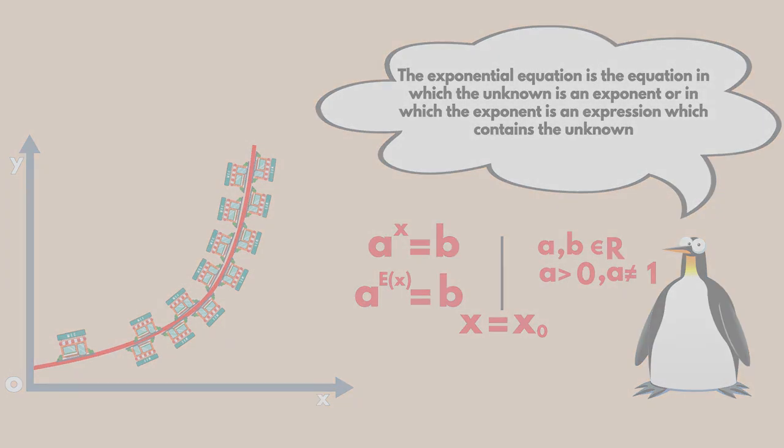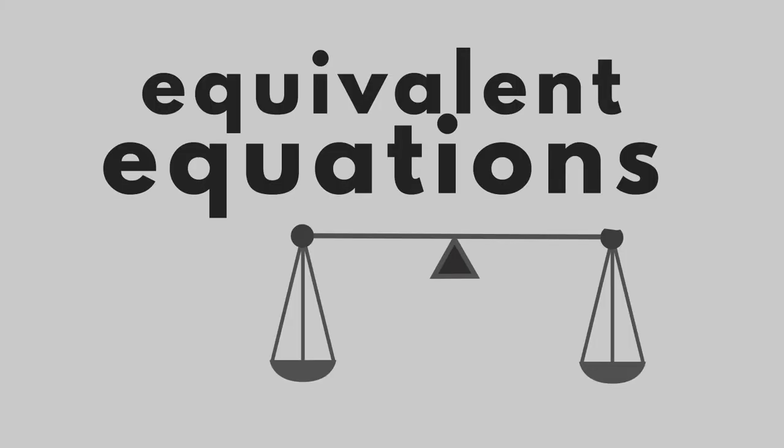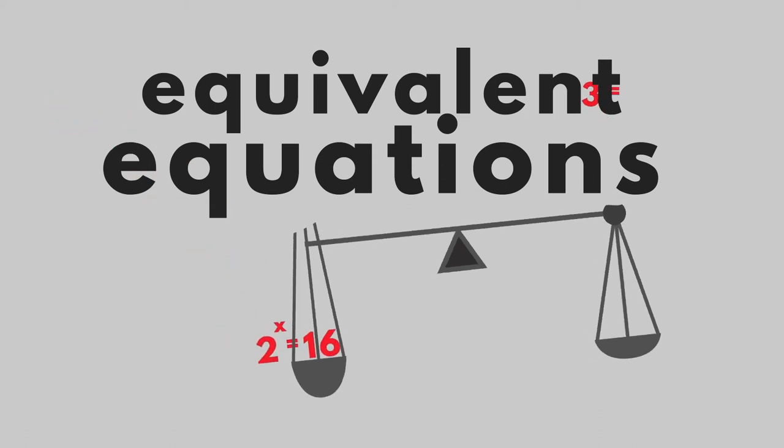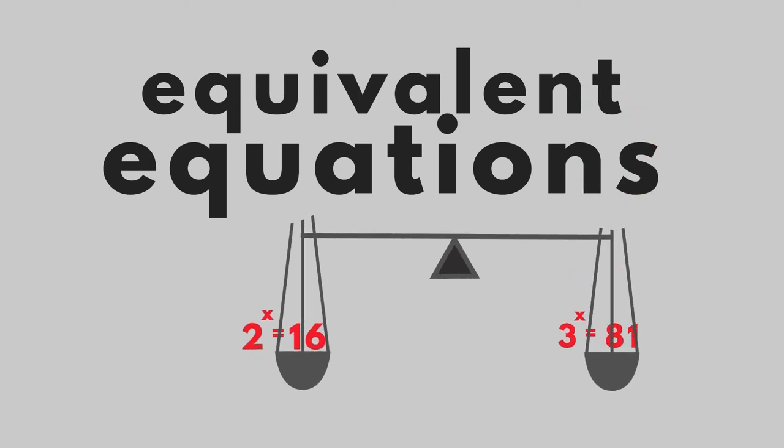Two exponential equations are called equivalents if the sets of solutions coincide. For example, 2 raised to x is equal to 16 and 3 raised to x is equal to 81 are equivalent because solution x0 equal to 4 is common to both equations.